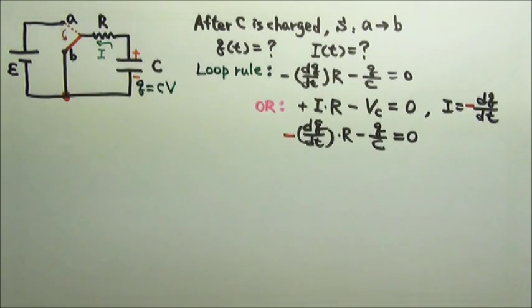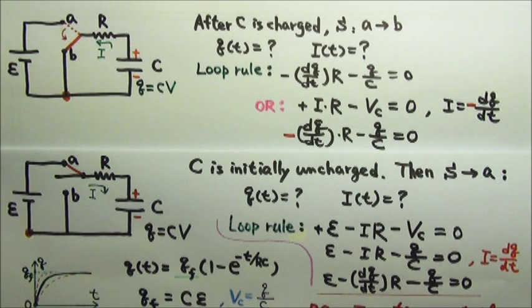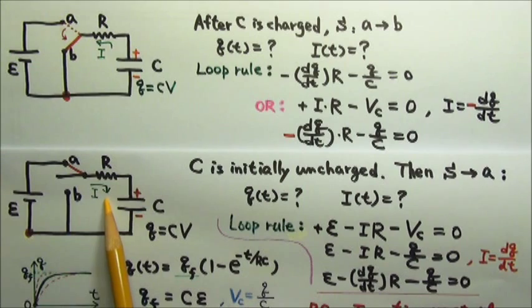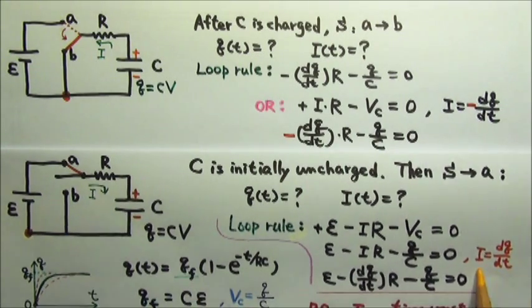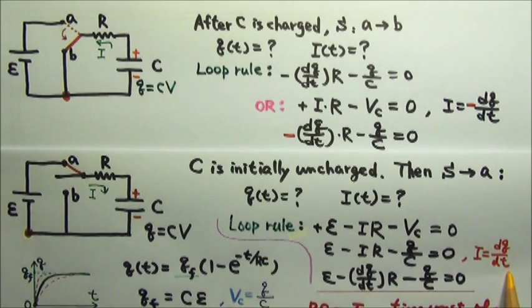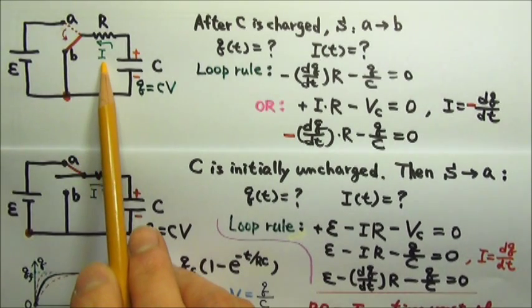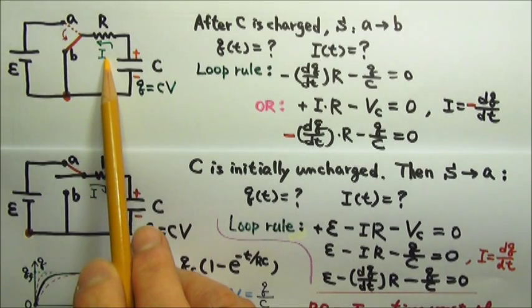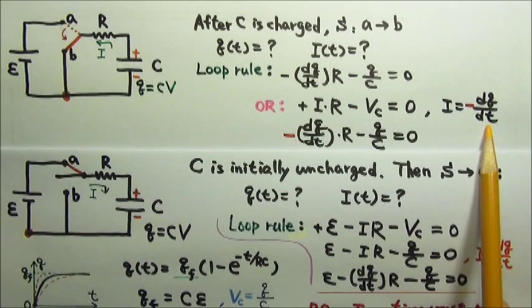Of course, this gives us the same differential equation. So to write the differential equation during discharging, we either have to use the charging current direction for I and I equals dQ/dt, or use the correct discharging current direction for I and I equals negative dQ/dt.